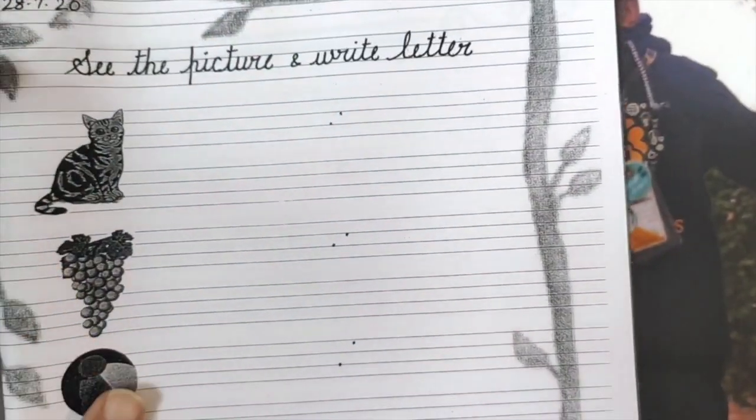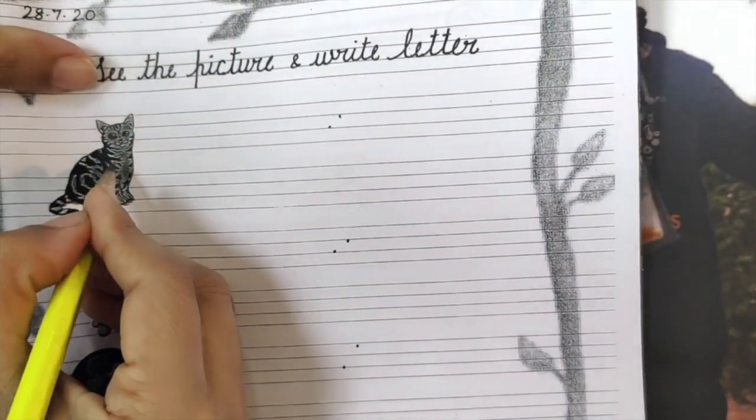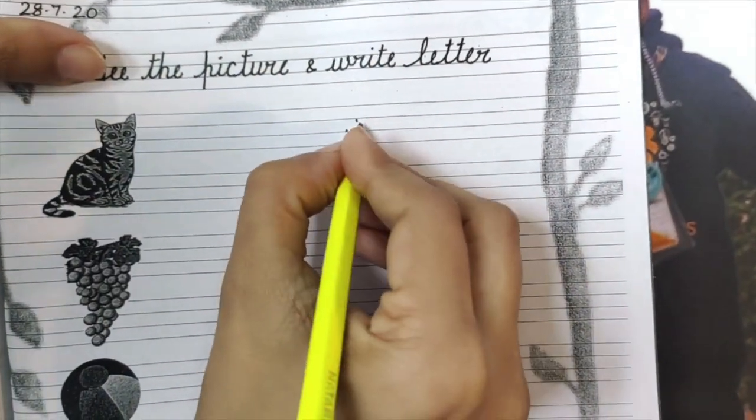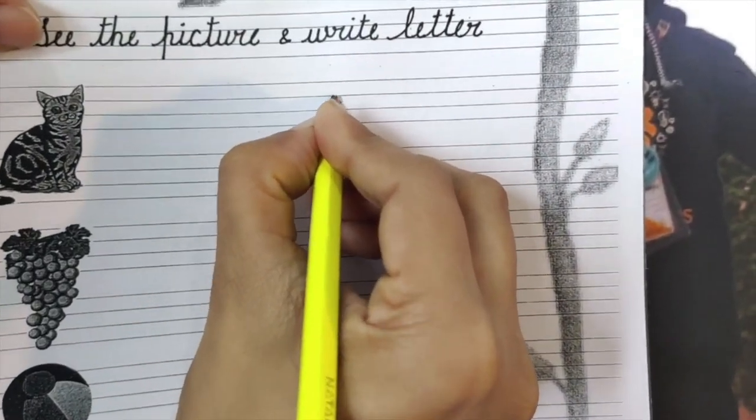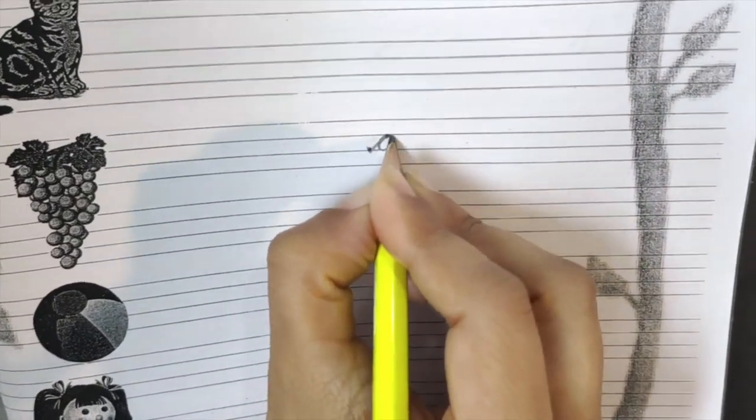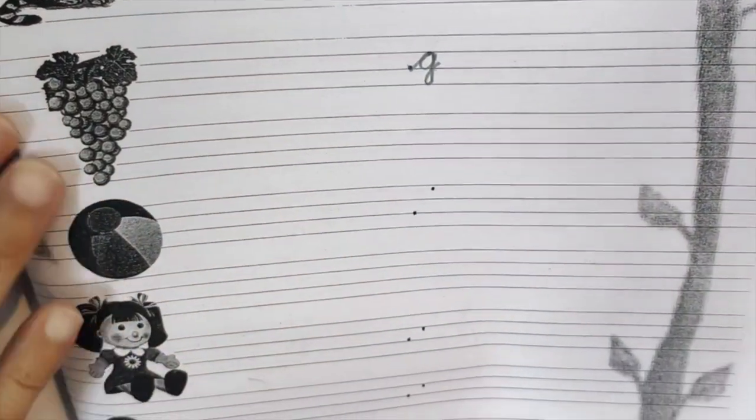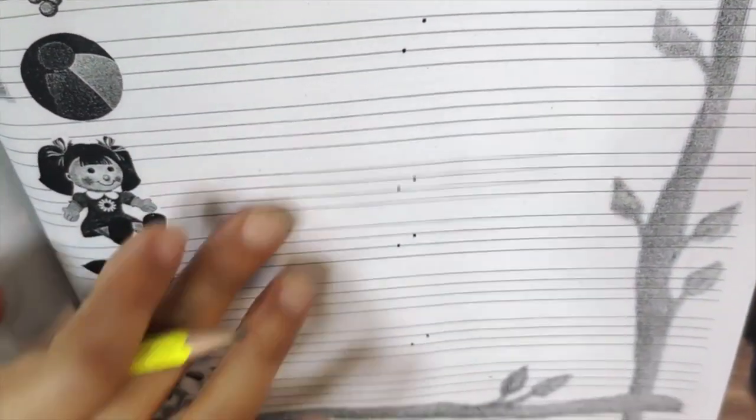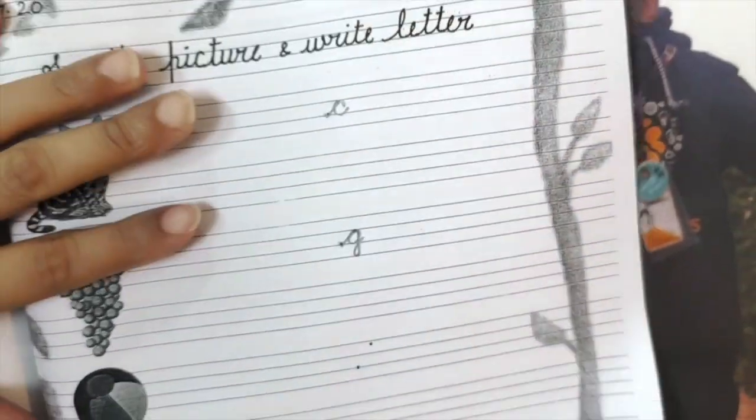We have to see the picture and write letter B. What is this? This is a cat. Where are the grapes? These are the grapes. Here we have to see the picture and write letter B.